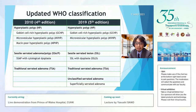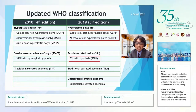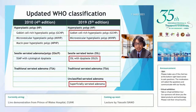Here is an update for the WHO recent classification. The changes since 2010: HP is now divided into two subtypes — goblet cell-rich hyperplastic polyp and microvascular hyperplastic polyp. The serrated region with dysplasia is now termed serrated region with dysplasia instead of cytological dysplasia. Also, a new concept such as the superficially serrated adenoma has been introduced.